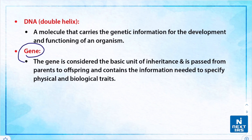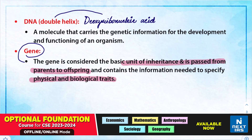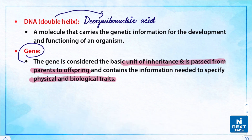When we say gene, it is considered the basic unit of inheritance, passed from parents to offspring, and contains the information needed to specify the physical and biological traits of any organism. Another term is DNA, which stands for deoxyribonucleic acid — a molecule that carries genetic information for the development and functioning of an organism.